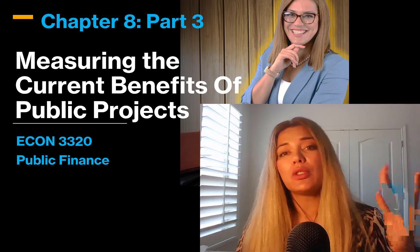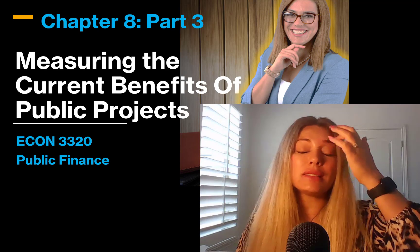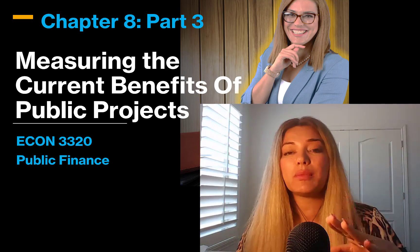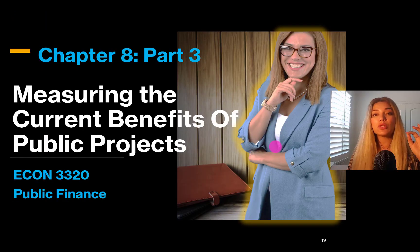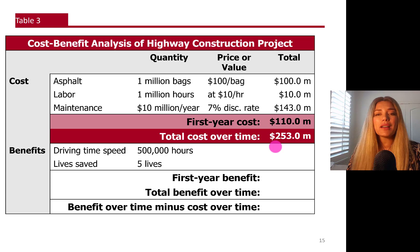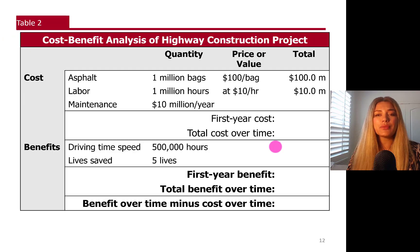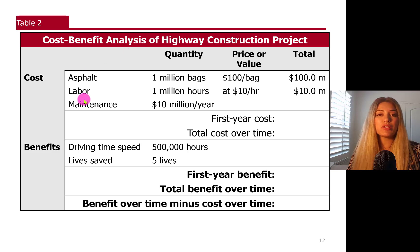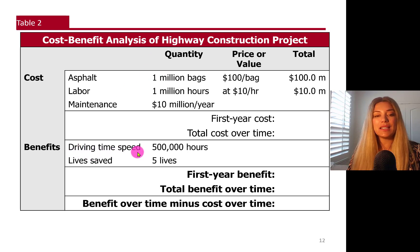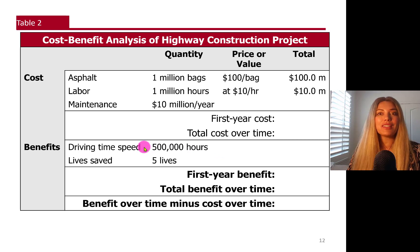Also, you should be watching part 5, the last part of this series, to understand the measuring of current benefits because we are going to really touch those topics in that part. Going back to our previous case: we were talking about a highway construction project as a public project, and we learned about the cost of the highway project in the cost-benefit analysis. The benefits of having this highway include driving time saved, so people now have access to a safe highway without any potholes.